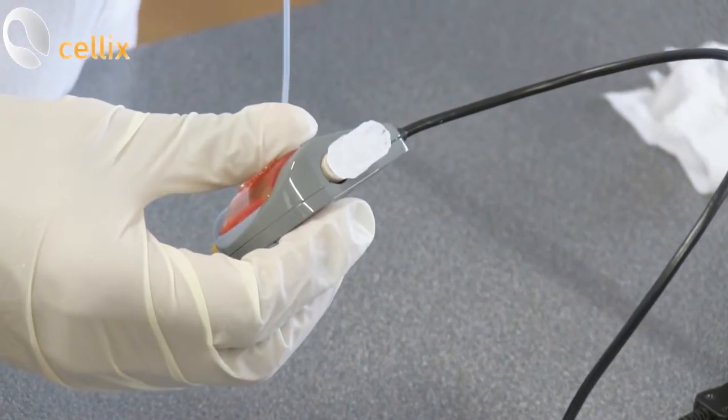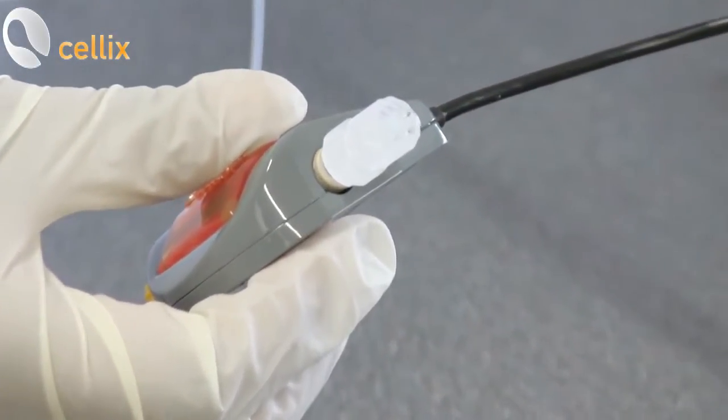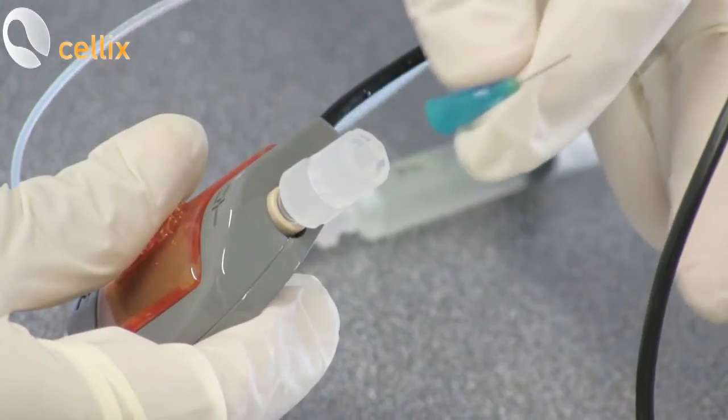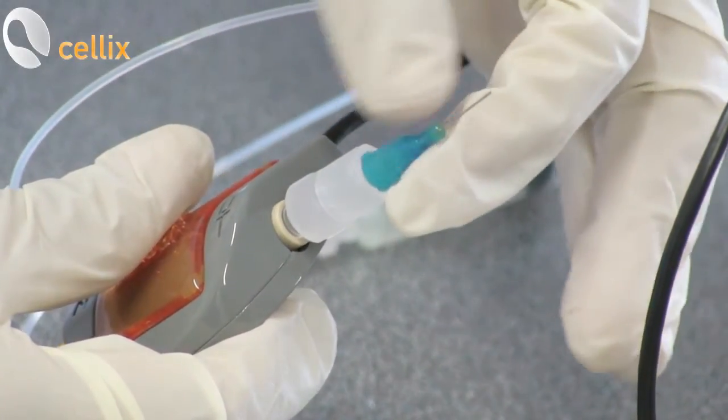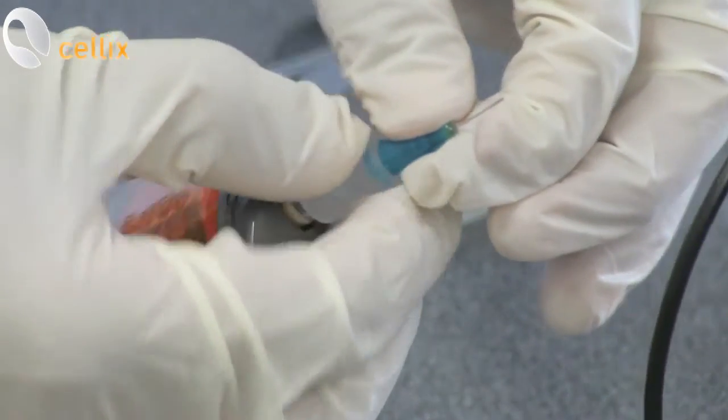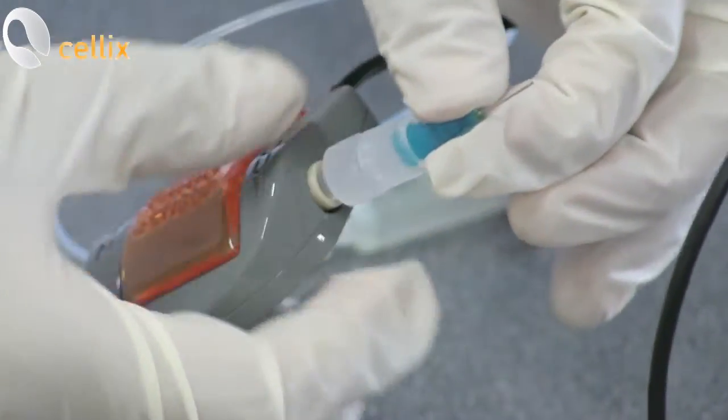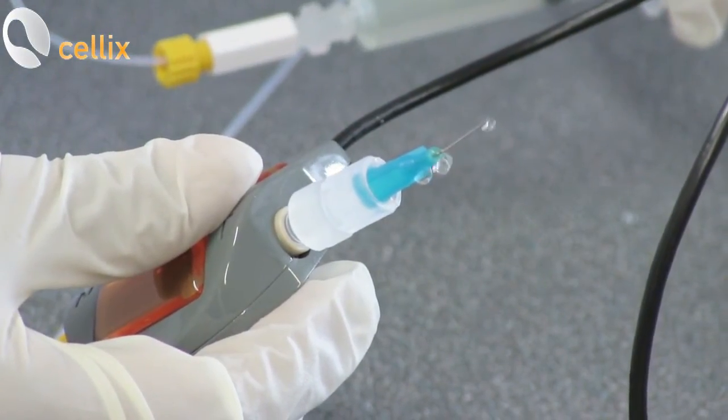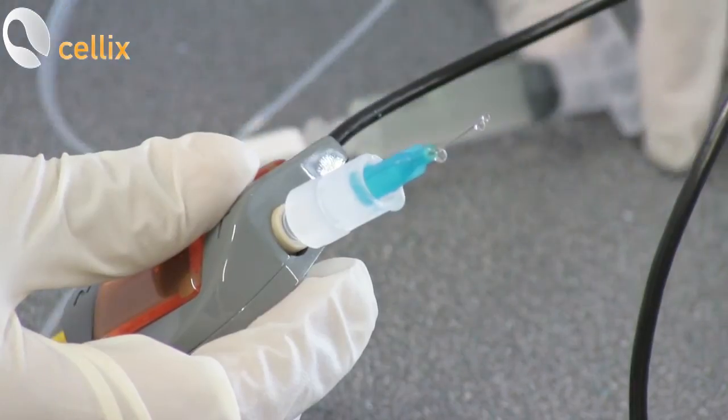With the syringe, just infuse some liquid to remove the bubbles. So you take this blue connector, connect it to the output, tighten it, and infuse some liquid to remove the bubbles.